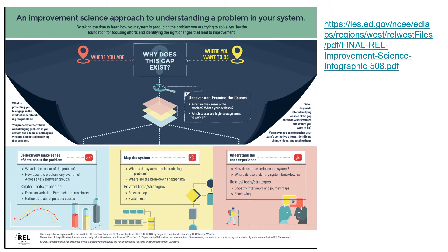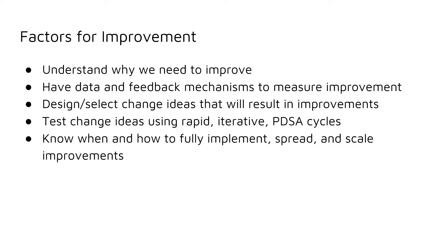This is a great infographic from the Institute of Education Sciences that details how a systemic improvement science approach can help us address the opportunity and achievement gaps in our current educational system. The factors essential to our improvement efforts include understanding why we need to improve, having data and feedback mechanisms to measure improvement, designing or selecting change ideas that will result in improvements, testing change ideas using rapid iterative PDSA cycles, and knowing when and how to fully implement, spread, and scale improvements.